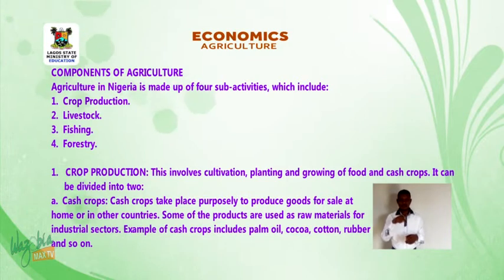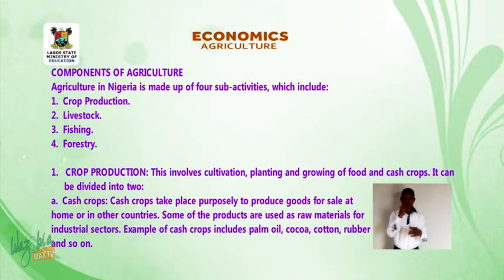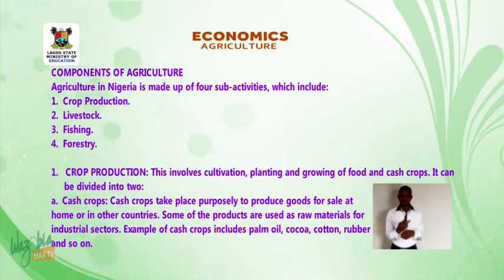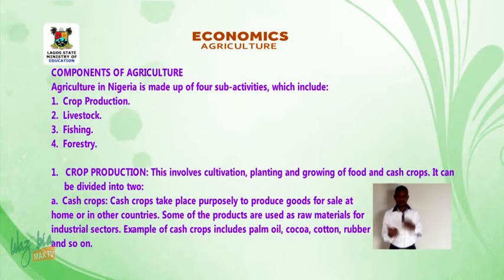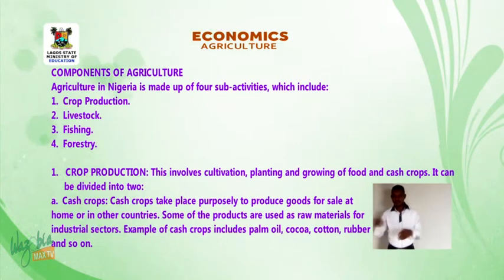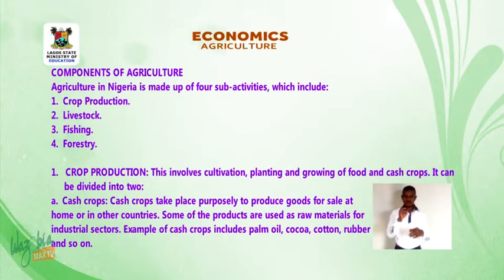Crop production involves cultivation, planting, and growing of food and cash crops. It can be divided into two. A. Cash crops: Cash crops are grown purposely to produce goods for sale at home or in other countries. Some of the products are used as raw materials for industrial sectors. Examples of cash crops include palm oil, cocoa, cotton, rubber, and so on.